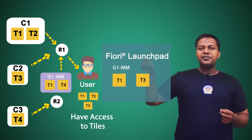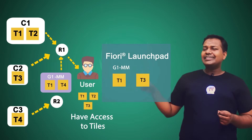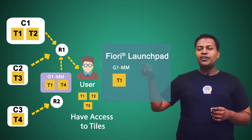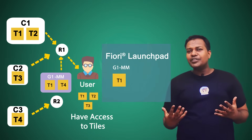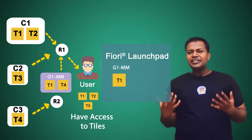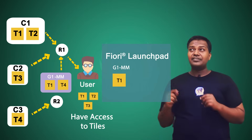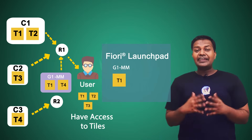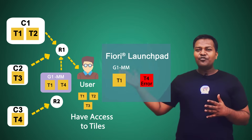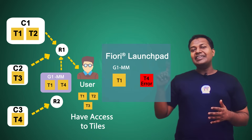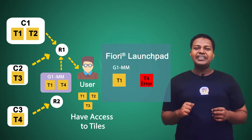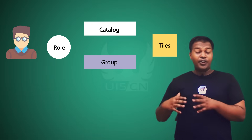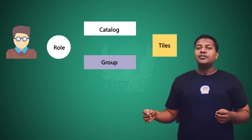What if we put tile T4 in the group, but T4 is not present in catalog C1 or C2, which are assigned to role R1? Will the launchpad show the tile? The answer is: tile T4 will be shown in the launchpad, but it will give an authorization error.